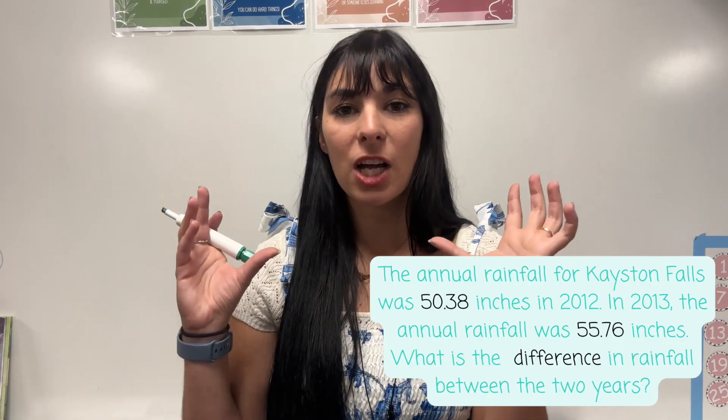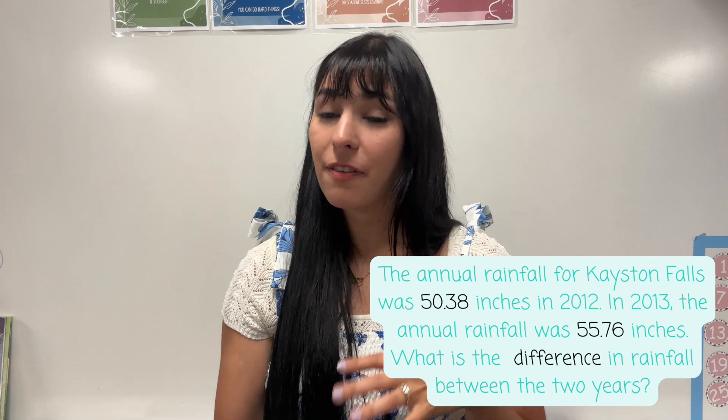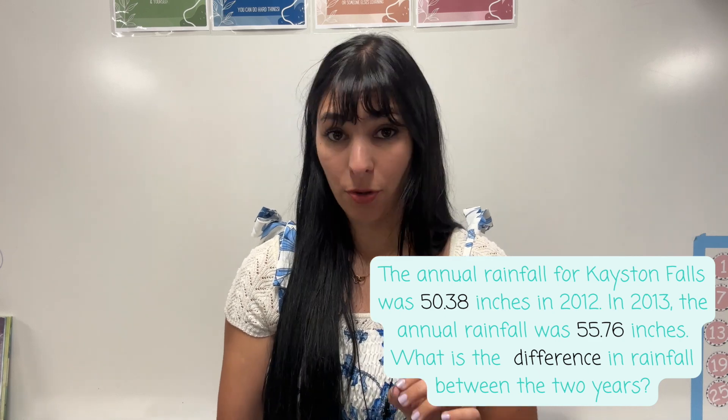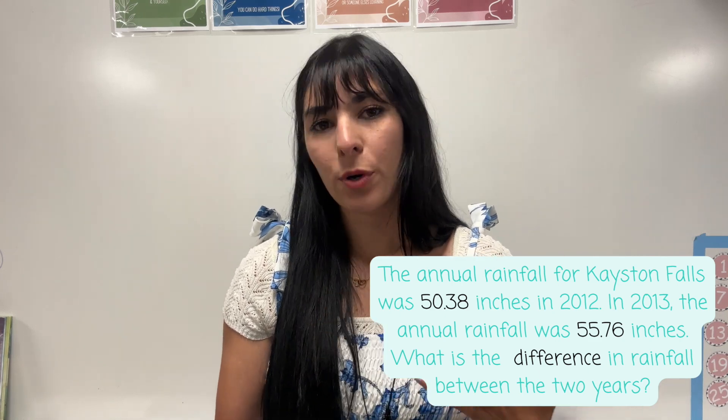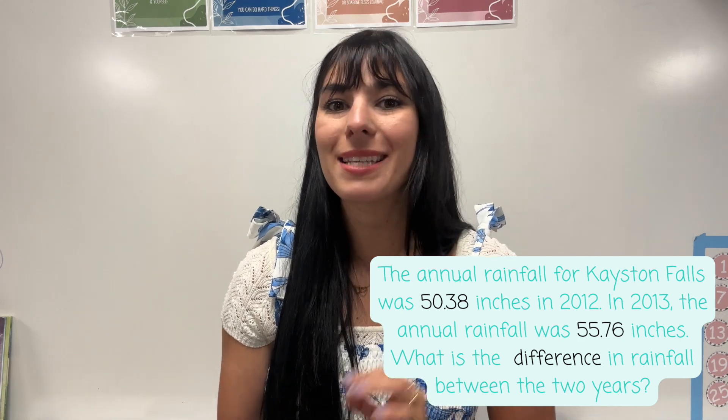Since we're comparing that rainfall, I'm going to look at my important information, which are my numbers, not 2012, 2013, but the actual amount for rainfall. So I have 50.38 and 55.76. We're going to circle those. Now I need to figure out what we're doing. So I'm looking for my key word. And my key word in this problem is difference. Difference means subtraction. So I'm going to go ahead and take those two units that we circled and find the difference. We're going to subtract them.